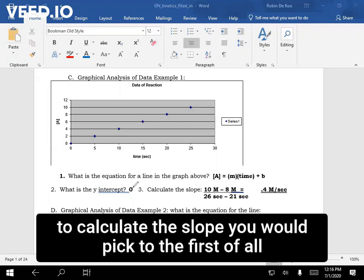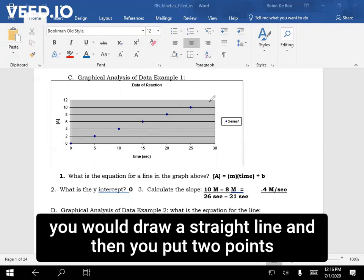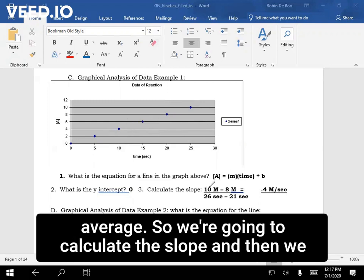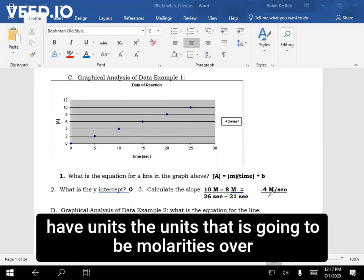And were you to calculate the slope, you would pick two, well first of all, you would draw a straight line. And then you put two points, not data points. You don't ever pick data points because you want to use the average. So we're going to calculate the slope, and then we have units. So you notice it's going to be molarities over seconds.